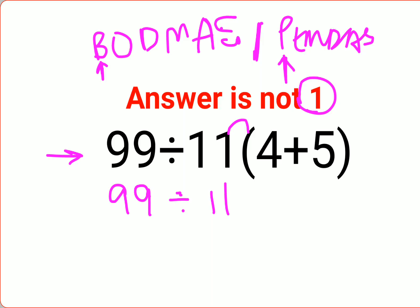And since there is no sign between 11 and the brackets, the sign is multiplication. And 4 plus 5 is 9. Now, at this step,